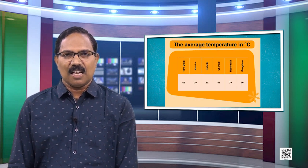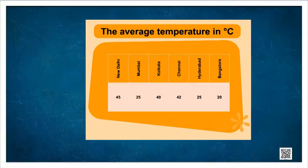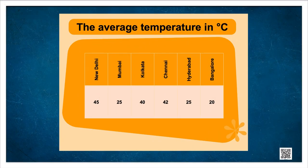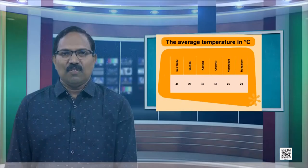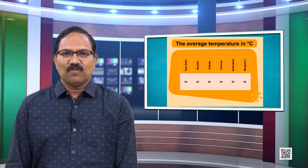Let us take an example. Look into the data given in the table: the average temperature in degree Celsius recorded in 6 metro cities of India on a particular day. New Delhi: 45°C, Mumbai: 25°C, Calcutta: 40°C, Chennai: 42°C, Hyderabad: 25°C, Bangalore: 20°C. Now we want to draw a bar graph of this data.